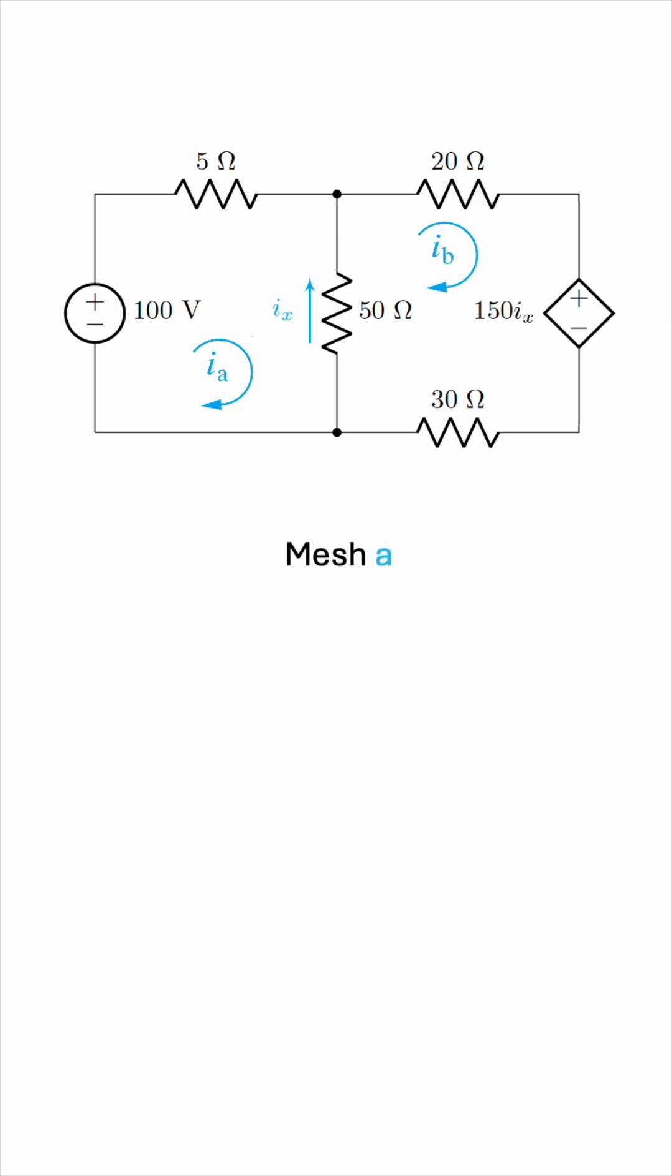For mesh A, let's write the KVL equation. We have negative 100 volts from the source, plus 5 times Ia, that's the voltage drop across the 5 ohm resistor. And then the 50 ohm resistor is common to both meshes. When a resistor is common to two or more meshes, multiply its resistance by the difference of currents.